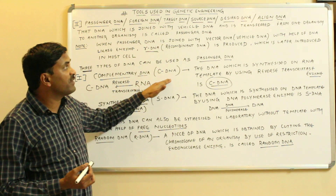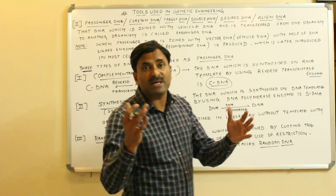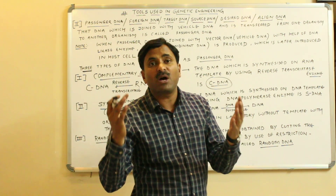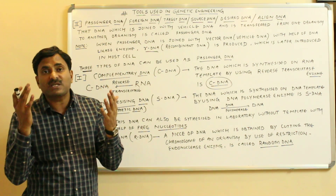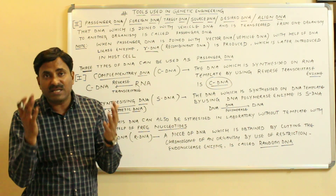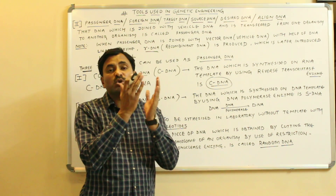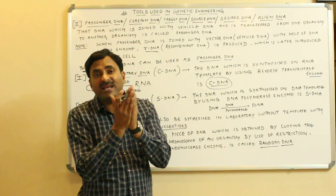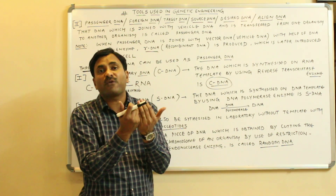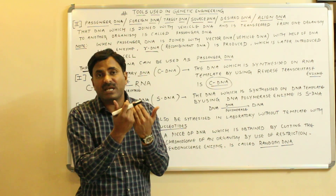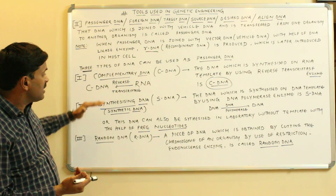Generally we use cDNA in genetic engineering as the desired DNA. Like blood banks, we now have gene libraries, and in gene libraries the DNA which is stored is actually the cDNA. Whenever we want to transfer DNA into another organism, we can take out the cDNA from the gene libraries or DNA libraries. So cDNA can be used as the passenger DNA.